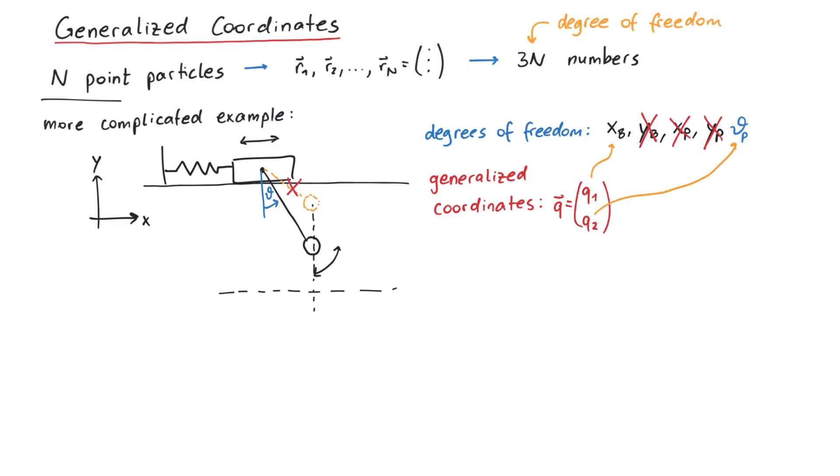Still, if we only know the generalized coordinates of a system, we just know its current state. But we cannot calculate how it might behave in the future. For this, we also need their time derivatives, q dot, which are called generalized velocities.